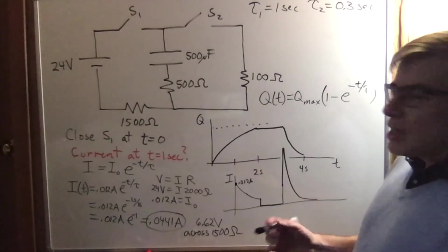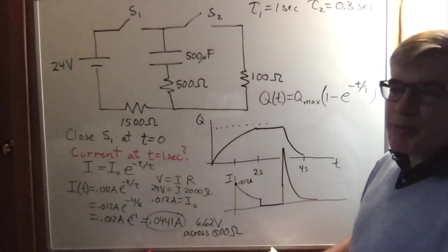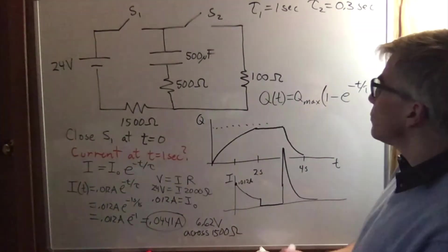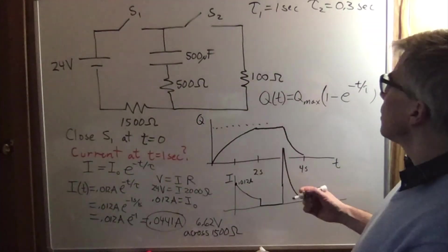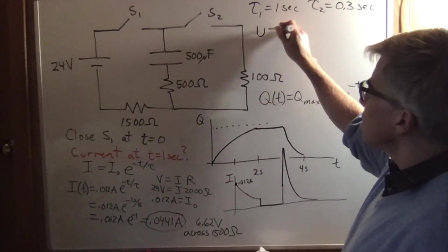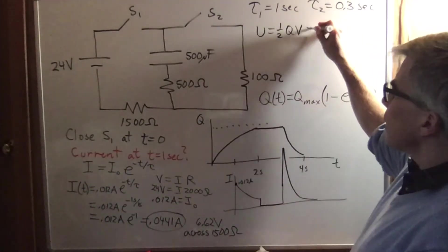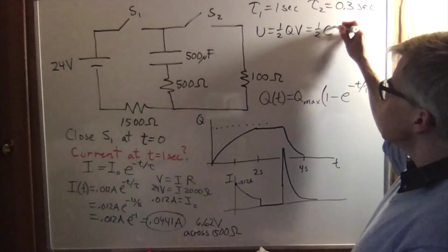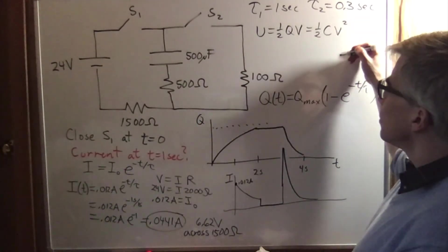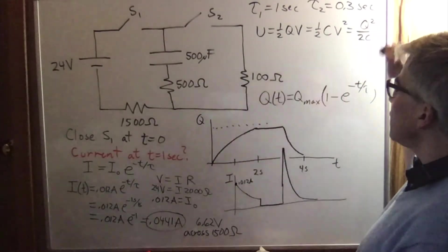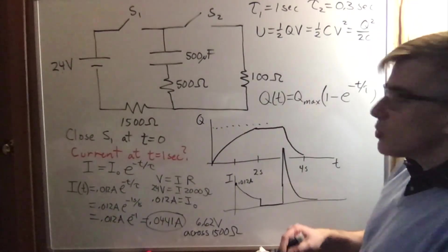One more thing we could ask. How much energy is on the capacitor at say time equals one second again during the charging part? The energy could be written as one-half qv. That could also be written as one-half cv squared. Or it could be written as q squared over 2c. And that's probably the easiest for us. We could find the charge and then use the capacitance.